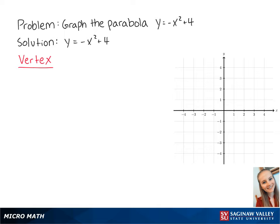If we use the vertex formula, we get x equals 0 over 2 times negative 1, which is equal to 0. If we plug 0 into the original equation, we get y equals negative 0 squared plus 4, which is equal to 4. So the vertex is at (0, 4).